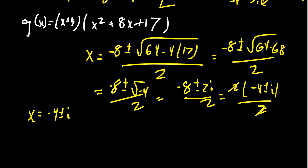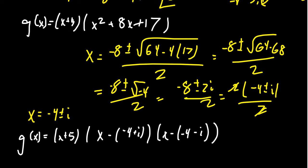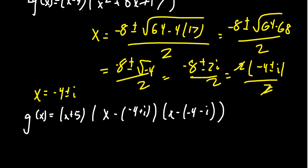And so therefore, our polynomial will factor as g of x looks like x plus 5 times x minus negative 4 plus i. We're also going to get an x minus negative 4 minus i. If you don't like the double negatives, you can distribute the negative signs right here. And this would give us g of x equals x plus 5, and then we get x plus 4 minus i and x plus 4 plus i.